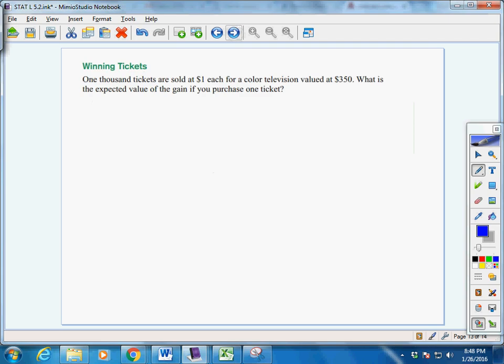1,000 tickets are sold at $1 each for a color television valued at $350. What is the expected value of the gain if you purchase one ticket? We're going to come back to that. What does it mean by expected value of the gain?